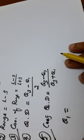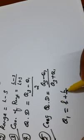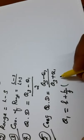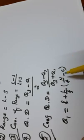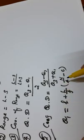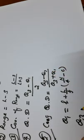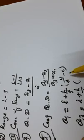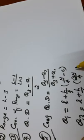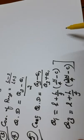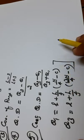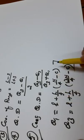Q1 formula: L plus H by F, where N by 4 minus C. This is Q1 — that is the 25th percentile. Q2 (median) uses N by 2. Q3 uses L plus H by F, with 3N by 4 minus C.